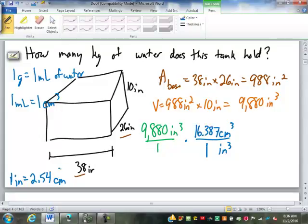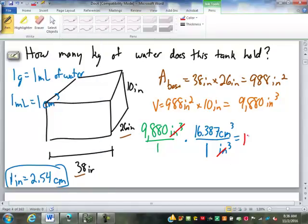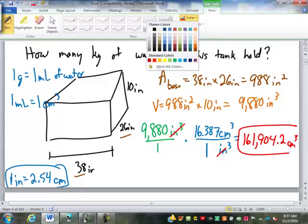So because we knew the conversion in linear units, just regular inches and centimeters, we can figure out the conversion in volume in cubic inches and cubic centimeters. So take our 9880 times that 16.387. We have 161,904.2. And that is cubic centimeters. That's our volume.